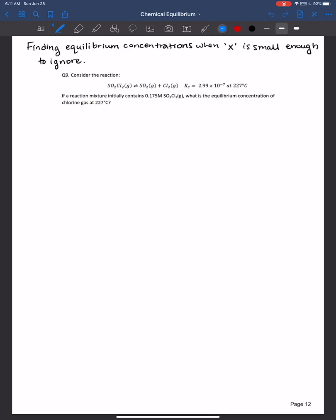It gives us the Kc, so that means we're working in concentration units, and it tells us that if the reaction mixture initially, and I always like to highlight that word initially, contains 0.175 molar of SO2Cl2, what is the equilibrium concentration of chlorine gas at 227 degrees Celsius?